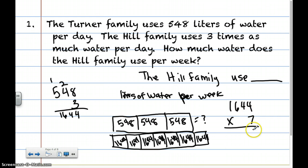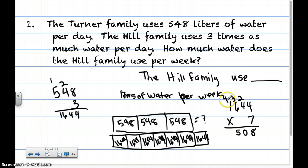I'm going to do 1,644 times 7 days a week. 7 times 4 is 28, carry the 2. 6 times 7 is 42, plus 3 is 45, carry the 4. 7 times 1 is 7, plus 4 is 11, carry the 1. My answer is going to be 11,508. So the Hill family uses 11,508 liters of water per week.